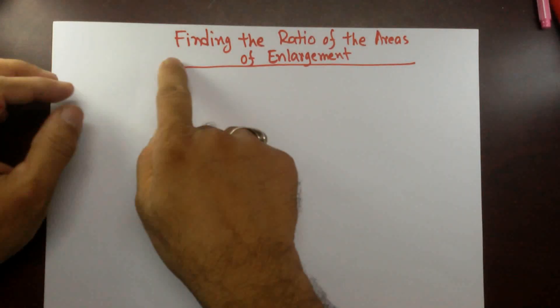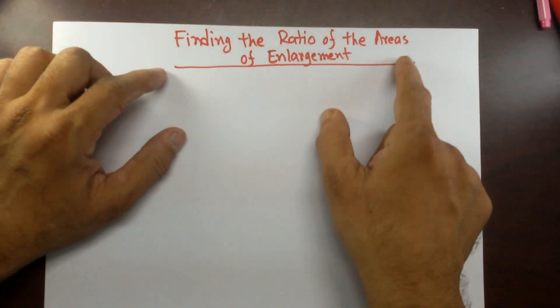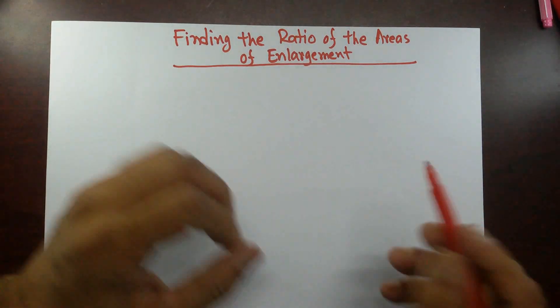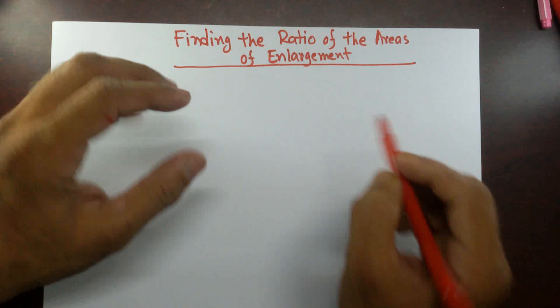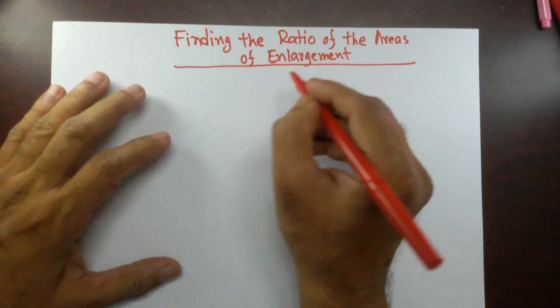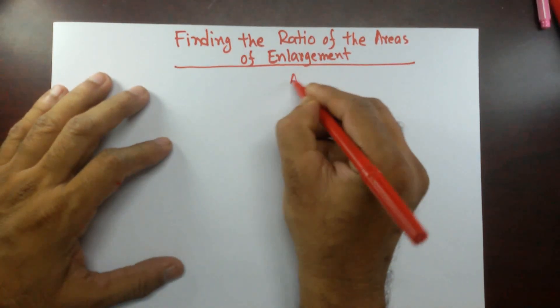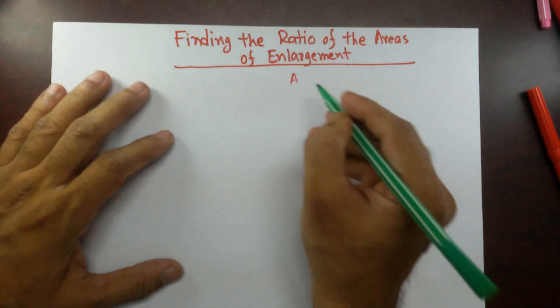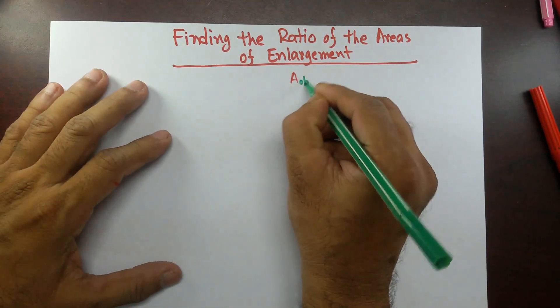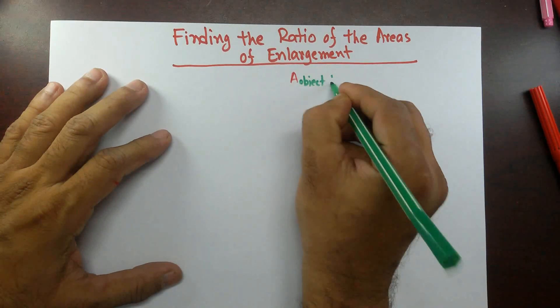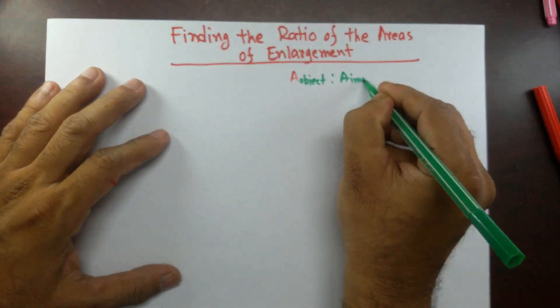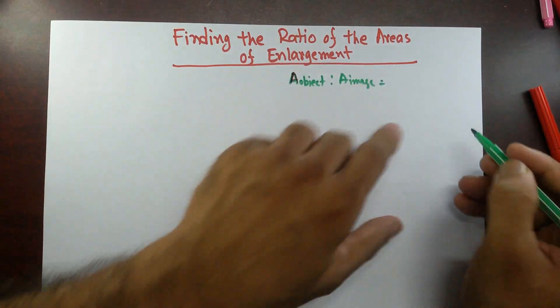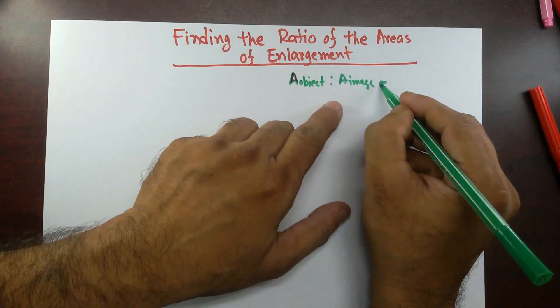Good morning, students. Today, I'll find the ratio of the areas of enlargement. Finding the ratios of the areas of enlargement means find the ratios of the areas of object and image. So area of the object is to area of the image. We are going to find out its ratio. How can I do that?